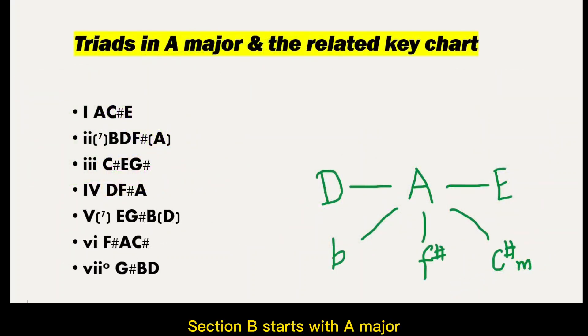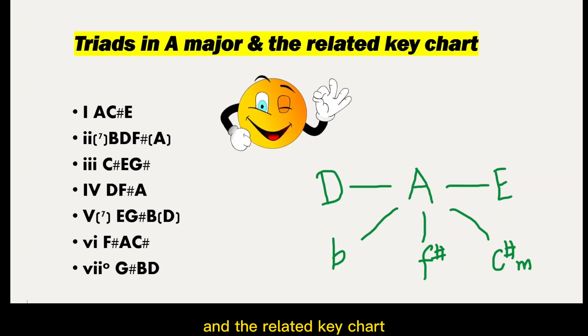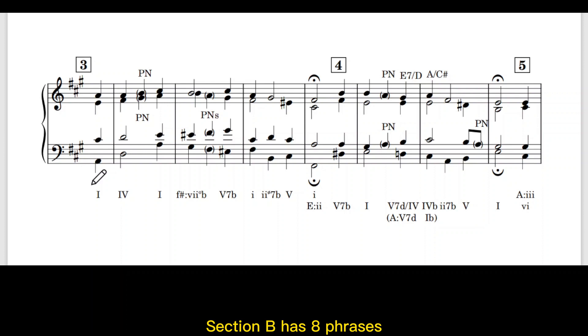Session B starts with A major. So let's prepare all the triads in A major and the related key chart. Session B has 8 phrases, that is from 3 to 10. We have discussed about session A phrases 1 to 2 in the last video. If you have not watched that video you can click the link from the description below before you carry on.